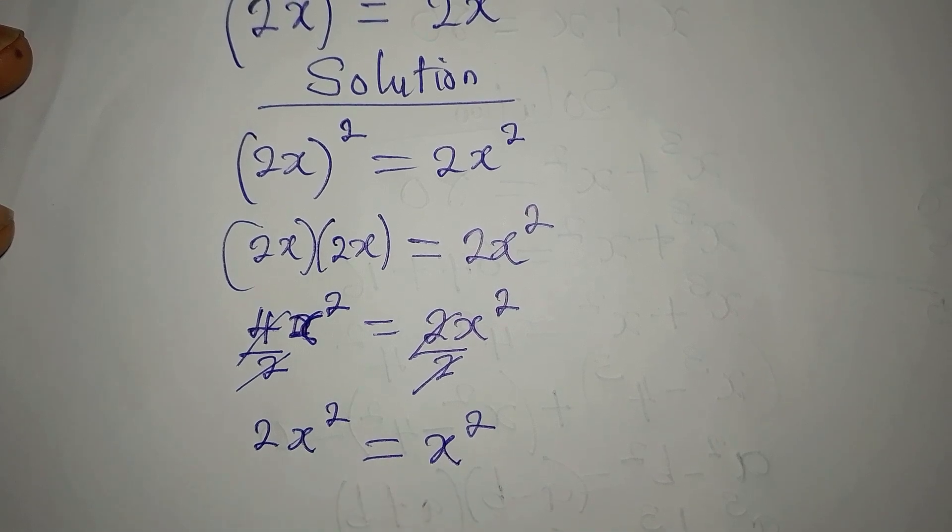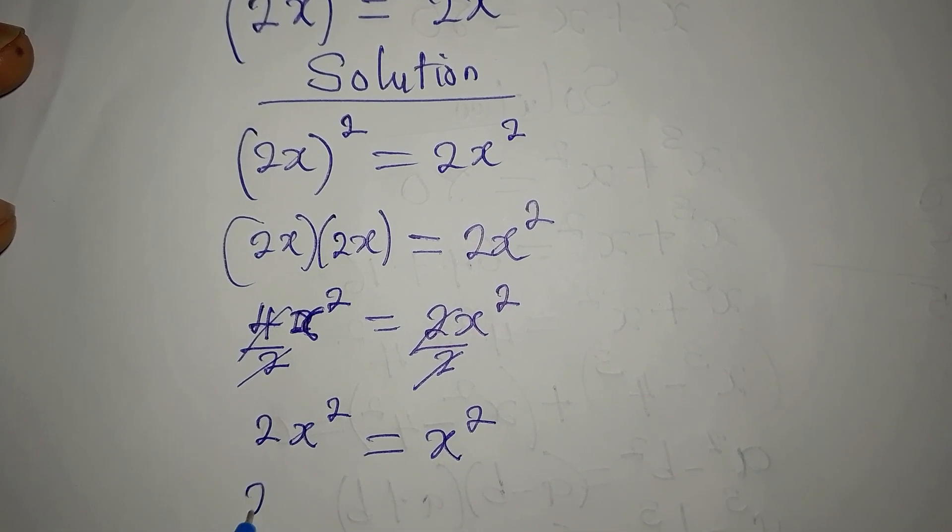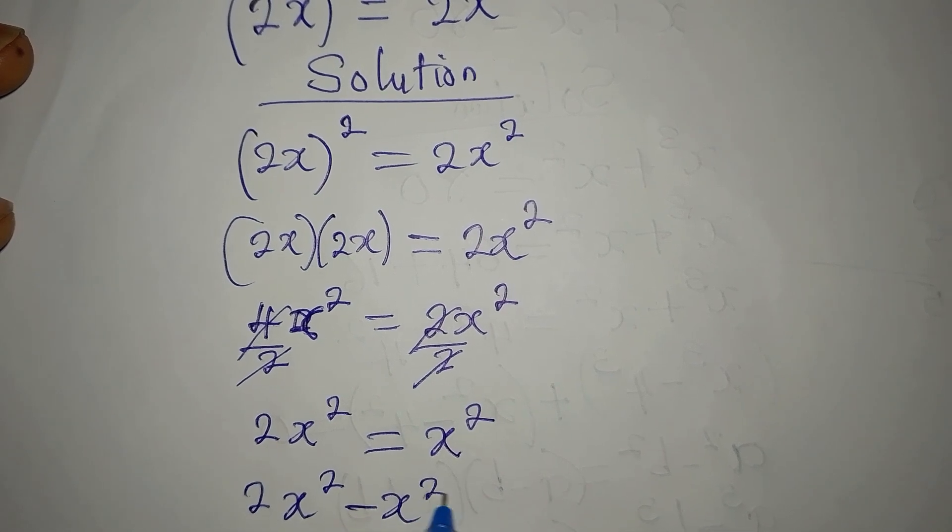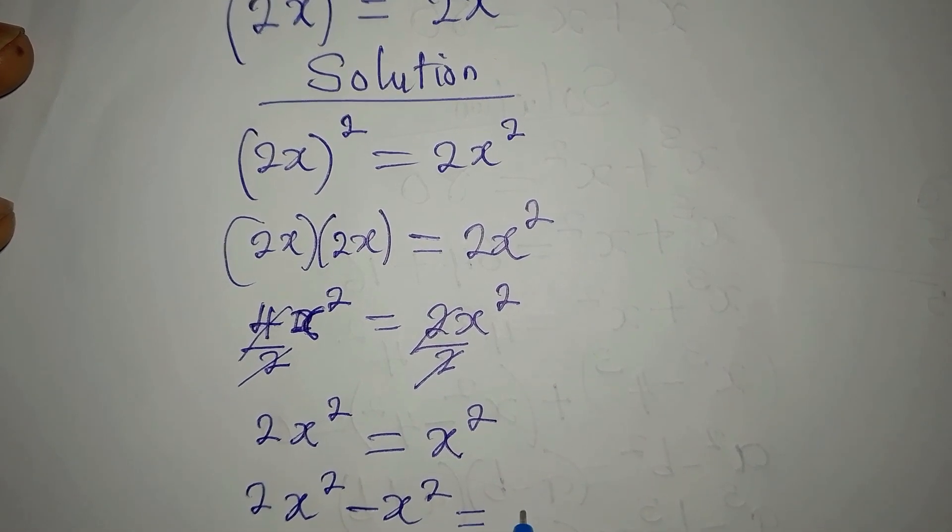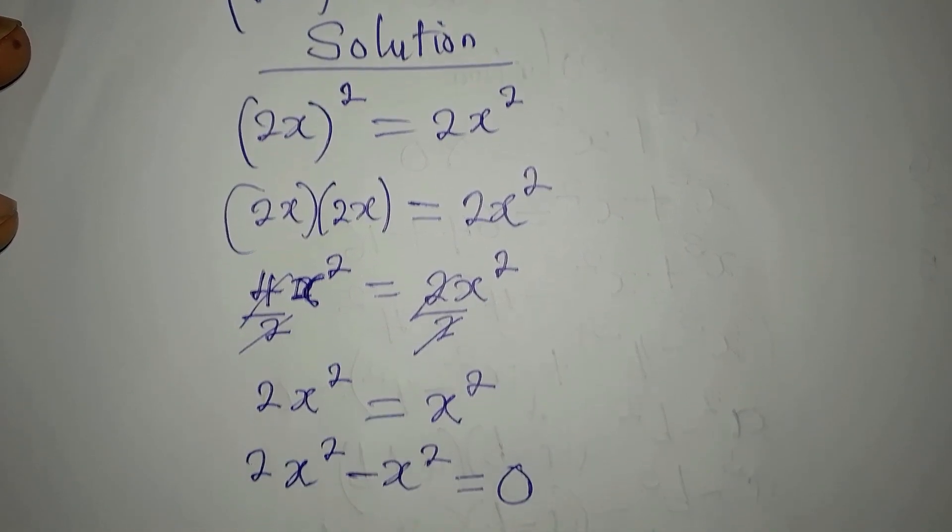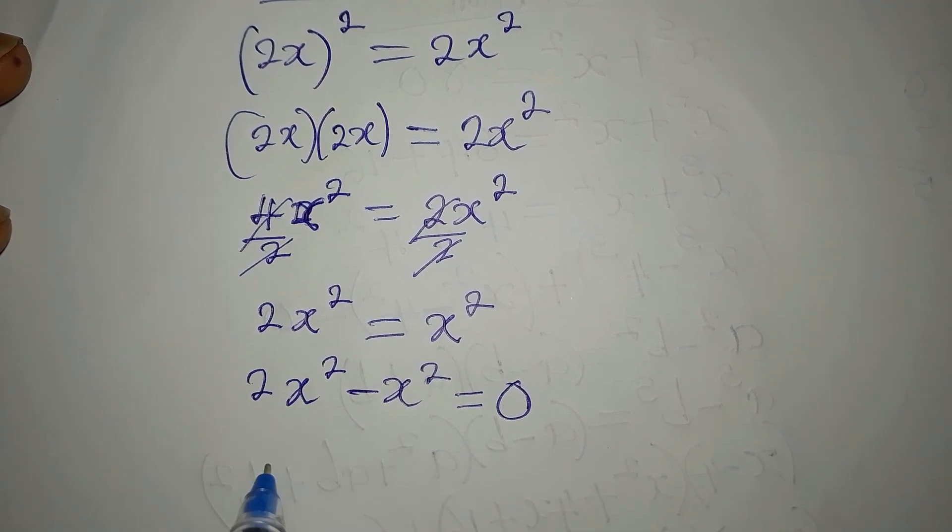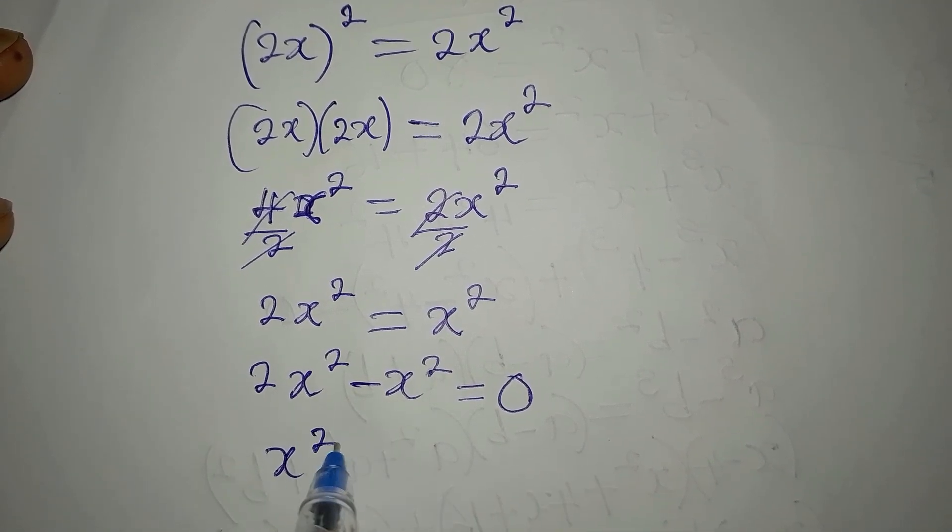So bring this to the left hand side. We'll now have 2x² minus x² equal to zero, since there's nothing on the right. And 2x² minus x² is x², which is equal to zero.